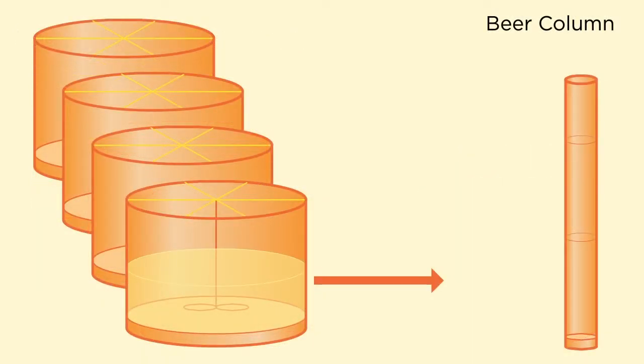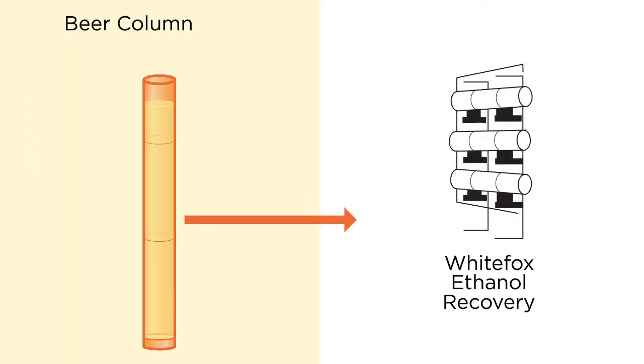As an option, the distillation system can be replaced with a single beer column and the beer overhead routed to a White Fox ethanol recovery system where 200 proof alcohol is produced.